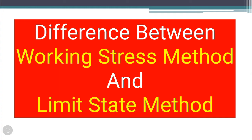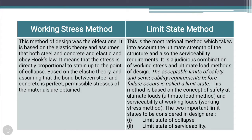The main principle of the Working Stress Method is that it is based on the elastic theory and assumes that steel and concrete are elastic and obey Hooke's Law. This means that stress is directly proportional to strain up to the point of collapse. Based on elastic theory, the bond between steel and concrete is assumed perfect, and permissible stresses of the materials are then obtained.